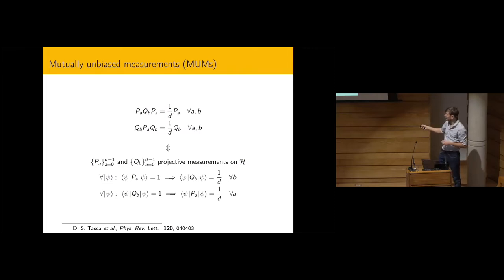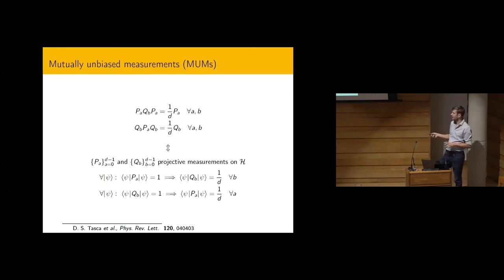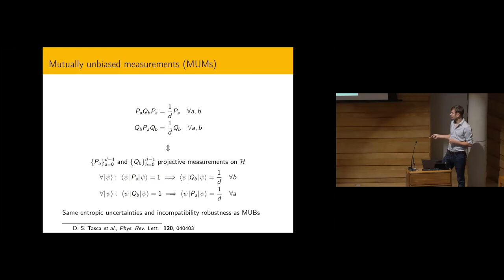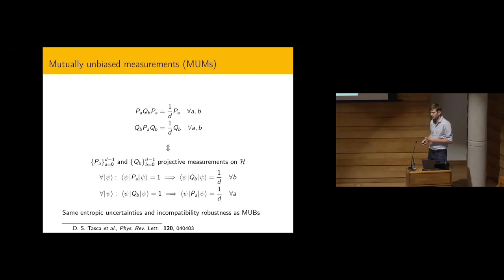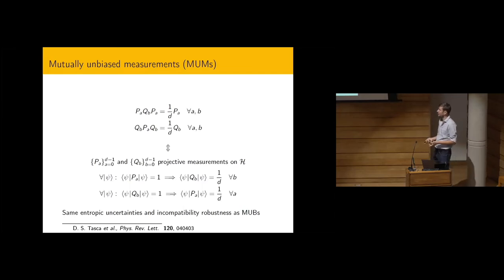We also found that this latter definition was introduced in a paper where they were called coarse-grained neutral unbiased bases, looking at continuous variable measurements. If you look at just this algebraic definition, MUMs share many properties with MUBs: the same entropic uncertainty relations and the same measurement incompatibility robustness. They really seem to behave very much like MUBs.